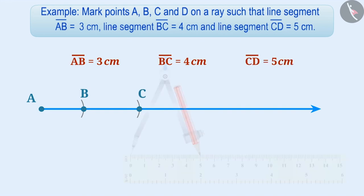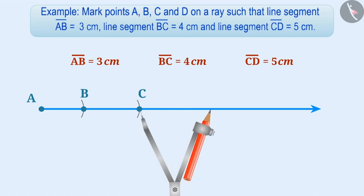Similarly, to represent D, take 5 cm measurement in the divider and measure 5 cm from point C on the ray. The position where this measure comes is point D.